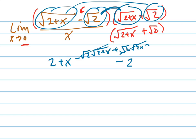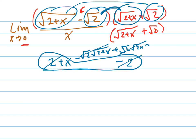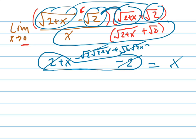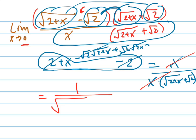Those middle terms cancel each other out, so all I have left is this. The numerator is simply x, which is really nice. On the bottom, don't multiply the x in. So on the bottom I get x times that conjugate, which was the square root of 2 plus x plus the square root of 2. Now the x's cancel out — it cancels to 1 — so I have 1 on top and the square root of 2 plus x plus the square root of 2 on the bottom.